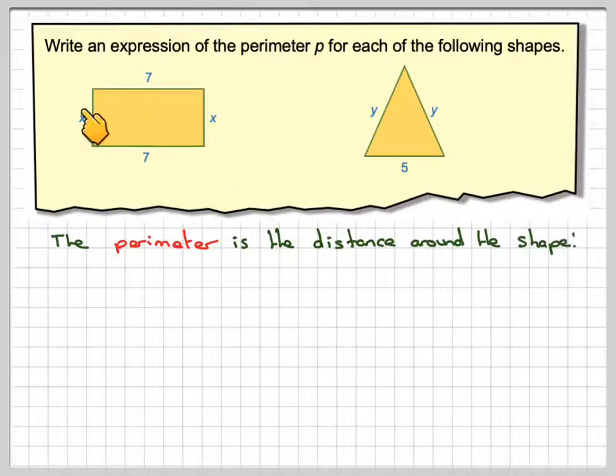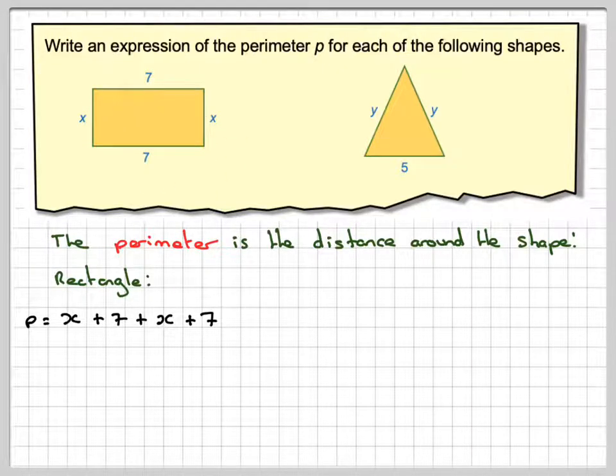You just need to start somewhere, so I'm going to start here and write down P. So for the rectangle, P is going to be equal to X plus 7 plus X plus 7. Go around in some sort of order - it doesn't matter where you start, but go around in some sort of order.